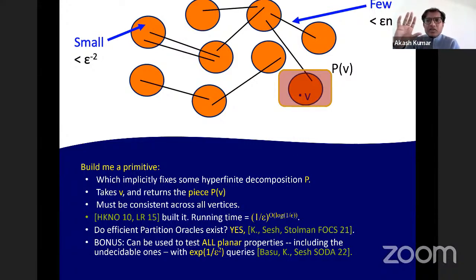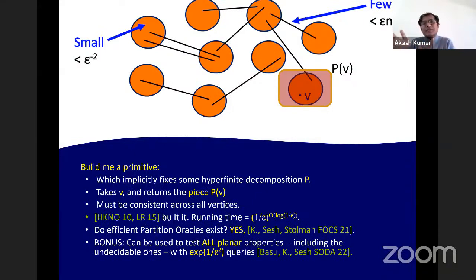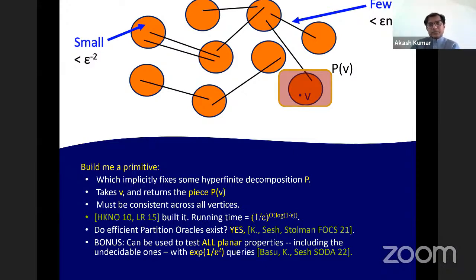A question: how can there be undecidable properties for finite graphs? For example, you might ask about homomorphism densities — given a polynomial, does it evaluate to a certain number where the polynomial is evaluated in homomorphism densities of certain subgraphs? The input is the graph but the polynomial is not — undecidability arises from properties defined over families of graphs as the size grows. All of this applies to bounded-degree graphs.